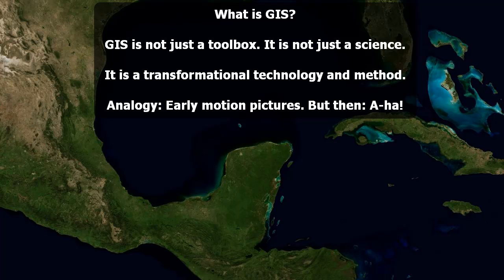What I mean by that is, consider the following. When motion pictures were first developed, at first they were filming stage plays — what had already been taking place on stage. But then, we can take the camera outside. We don't have to just film the same things that we were doing as stage plays. We can actually use this new technology in a new way. That's what I mean about GIS.